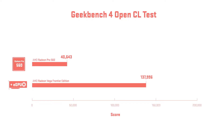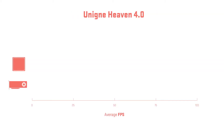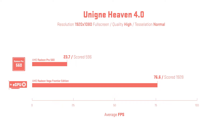For the first benchmark, I tested Geekbench 4 OpenCL Engine. This is a general compute test to see how good the graphics cards are in terms of basic computer number crunching tasks. The second benchmark was Unigine's Heaven Engine, which is a good basis for how well a graphics card can perform in something like gaming, and how frame rates will change depending on the quality of the card.